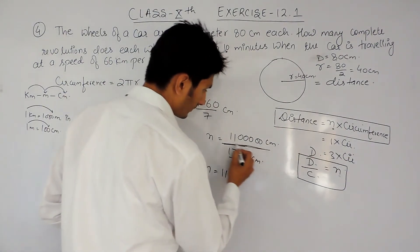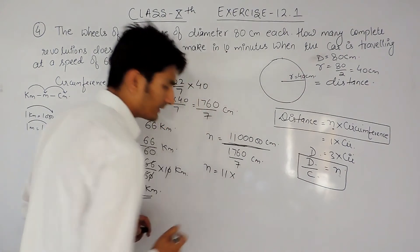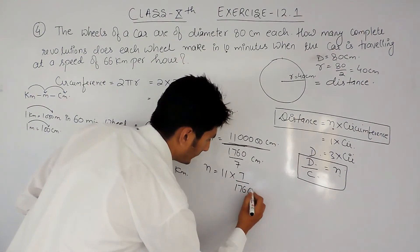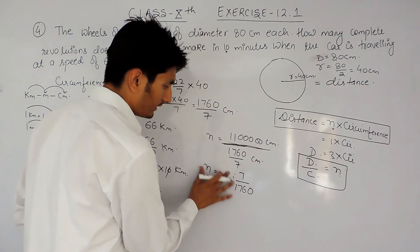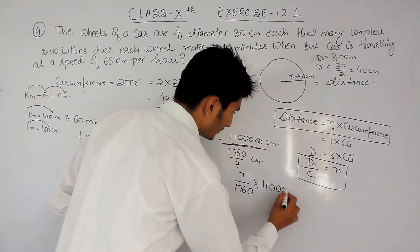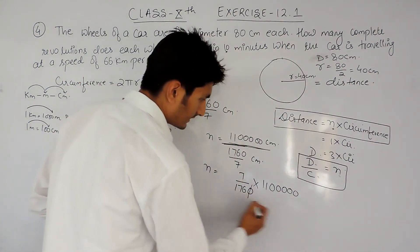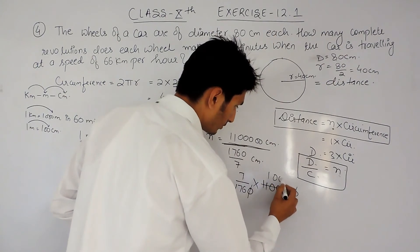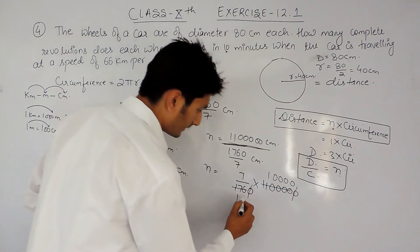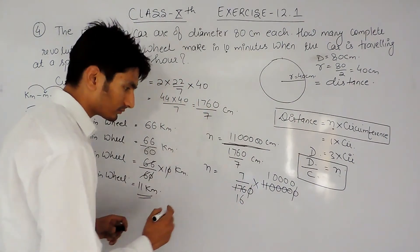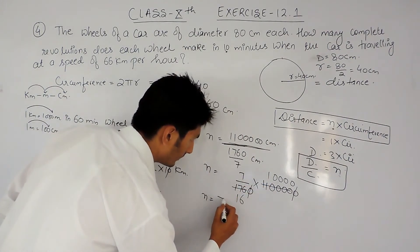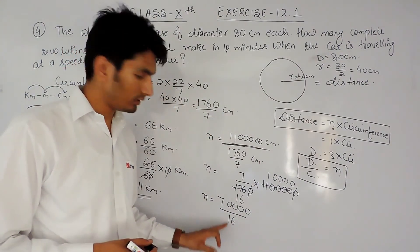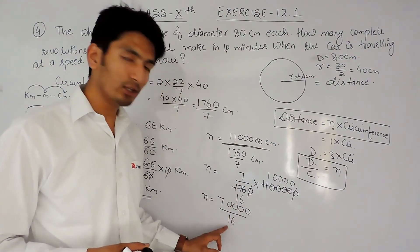Now our formula gives N = 1,100,000 ÷ (1760/7). When the division sign is converted, the fraction below becomes reciprocal — so denominator becomes numerator and numerator becomes denominator. This means N = 1,100,000 × 7 / 1760. After cancellation, this simplifies and we compute the result. The answer may come in decimals, but we take only the whole number part.